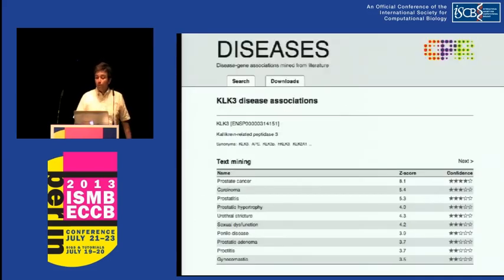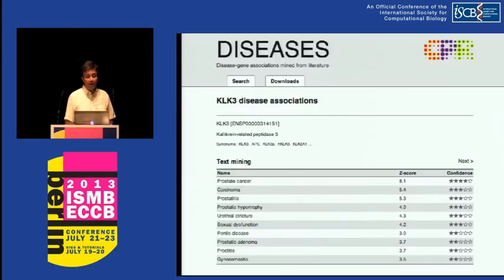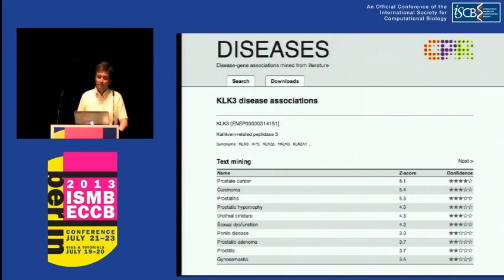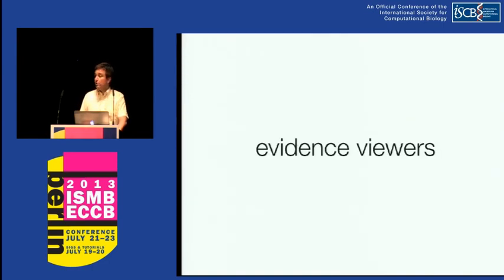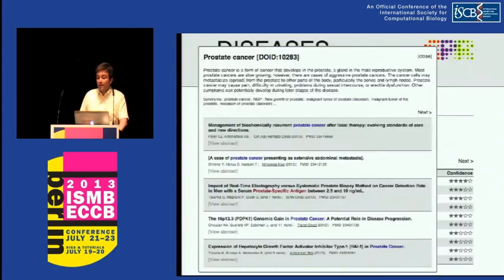The end result is that you go and query for a disease or a protein — in this case KLK3 — and you get a ranked list from text mining of the diseases it's most strongly associated with in the literature. The top-scoring one is prostate cancer, which shouldn't surprise anybody because KLK3 is the same thing as what's known as prostate-specific antigen. Another important feature, both in STRING and all of these resources, is evidence viewers. We always want people to be able to not just use this as a black box, but backtrack to the underlying evidence — so you can click on any interaction between a protein and a disease and immediately see the abstracts in which that gene is co-mentioned with that disease.